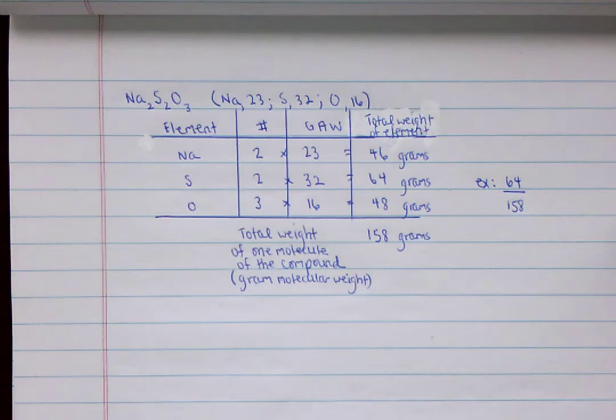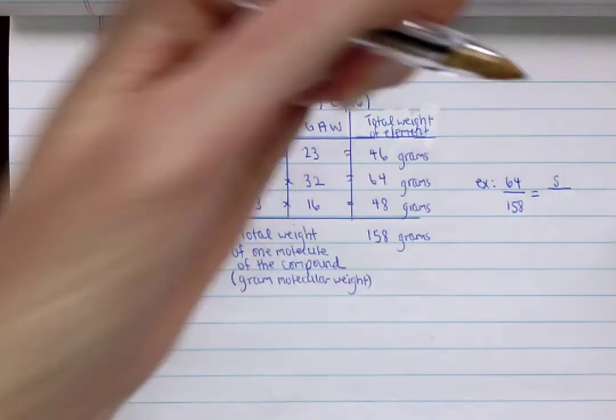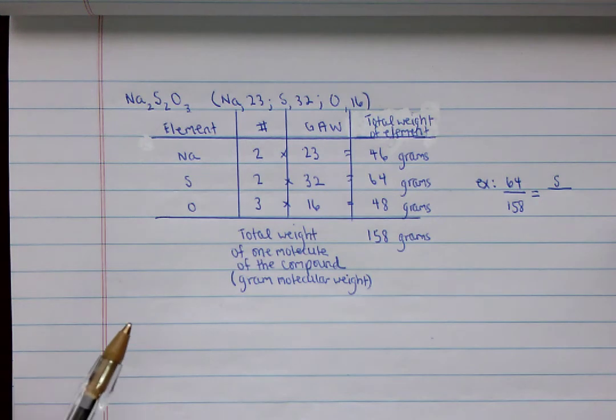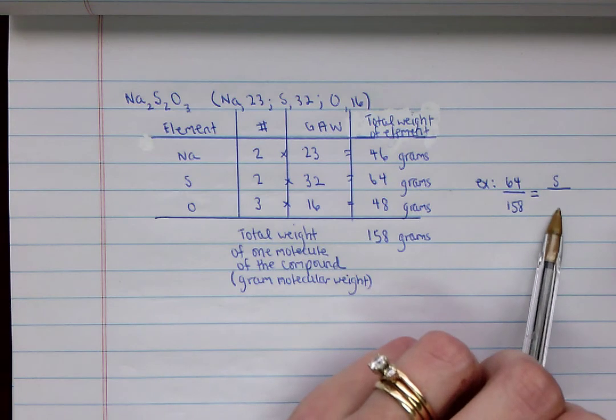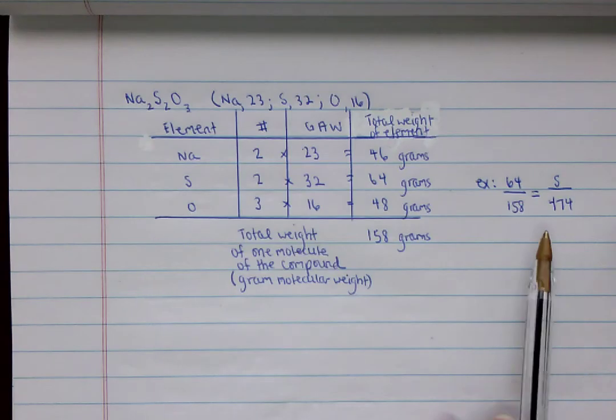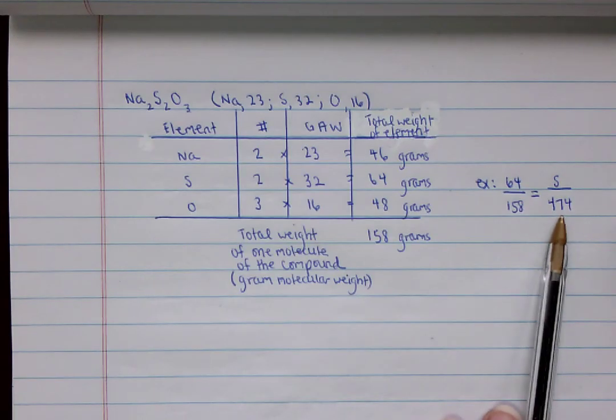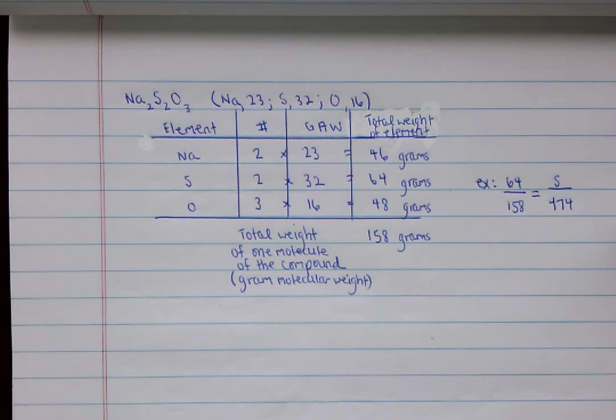And maybe you'd be asked to find again sodium, I meant sulfur, sulfur, and it would tell you 474, let's say you had 474 grams of the compound. So that's what you were finding before.